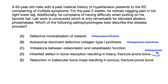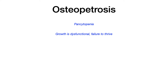Choice D — inherited defect in bone resorption resulting in heavy fracture prone bone — refers to osteopetrosis. There's not a lot to remember about osteopetrosis, but look for its association with pancytopenia. In our question, labs only showed an isolated elevated ALK-PHOS. Additionally, osteopetrosis typically presents in children with dysfunctional growth and failure to thrive — not a 63-year-old. Because of the different clinical picture, we can rule out choice D.